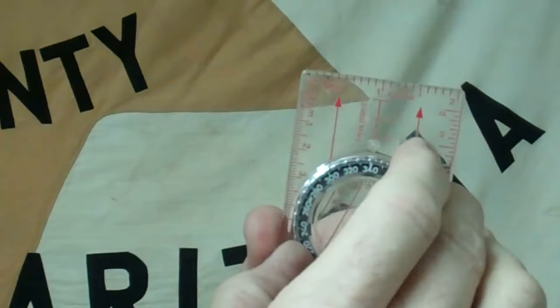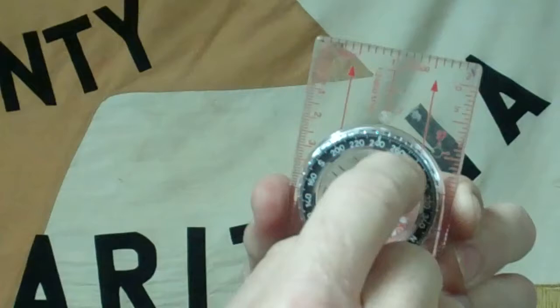Another important feature on this compass is the rotating bezel. You can see here that it rotates. There are degree marks all the way around from 0 to 360 degrees.